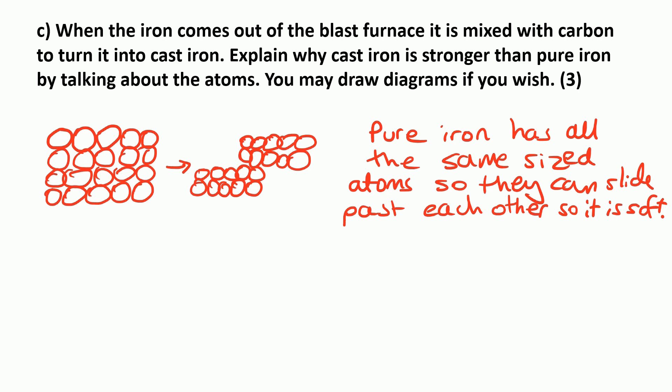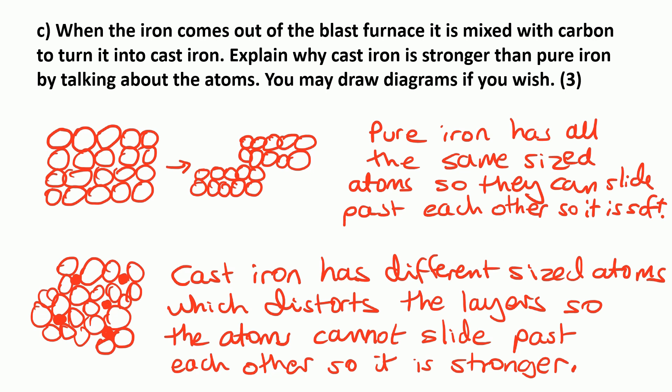The cast iron is what we call an alloy. It's a metal atom mixed with other types of atom. So because it's got different sized atoms, this distorts the layers so the atoms cannot slide past each other. And this means it is much stronger.